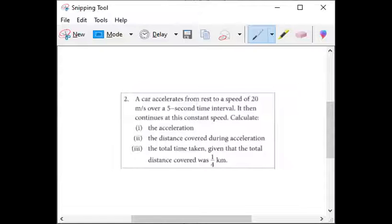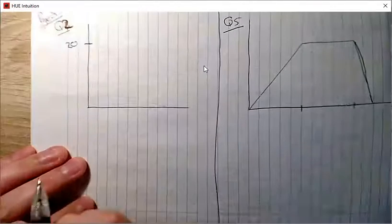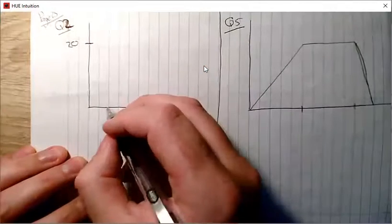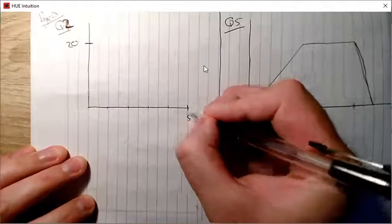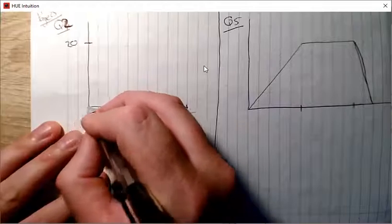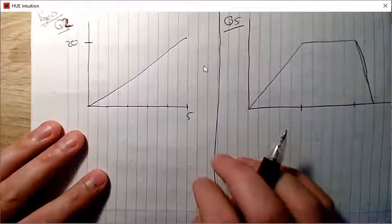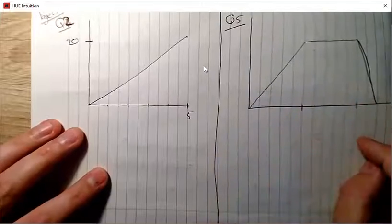Question 2: a car accelerates from rest to a speed of 20 meters per second over a five-second time interval, then continues at this constant speed. Before doing any calculations, draw a velocity-time graph. Draw your axes, mark 20 on the velocity axis and five seconds on the time axis. Starting from rest and reaching 20, those are the two points on the graph.